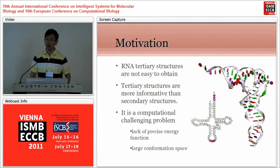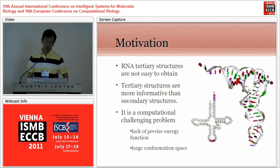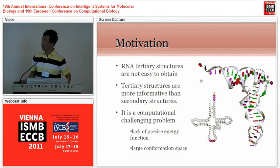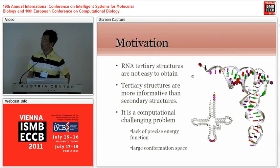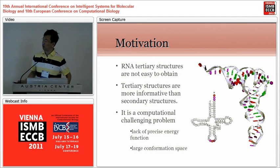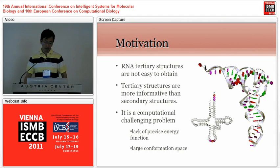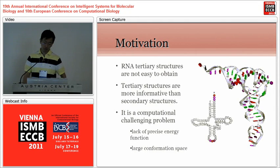We work on this problem because RNA tertiary structures are very important and hard to obtain. Tertiary structures are more informative than secondary structures. Even when we know the secondary structure of a transfer RNA, we don't know how the tertiary structure looks like. It is a very challenging problem in computation because we don't know a precise energy function of RNA structure and there is a large conformation space. We need a fast algorithm to sample conformations from that space.